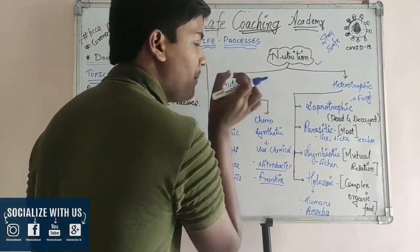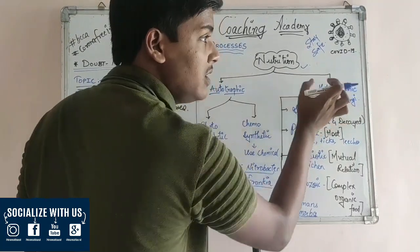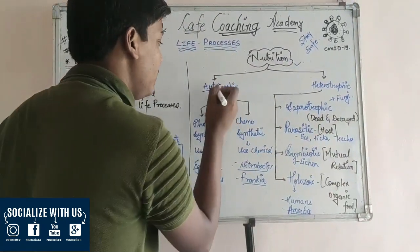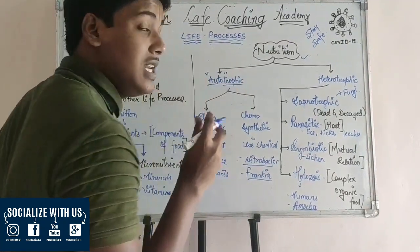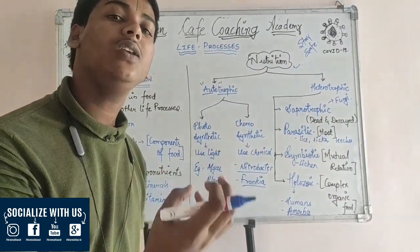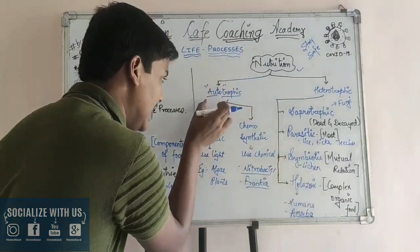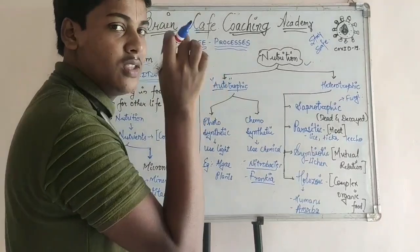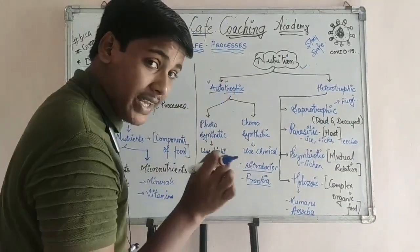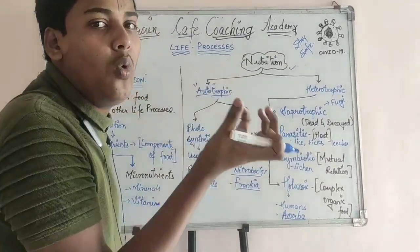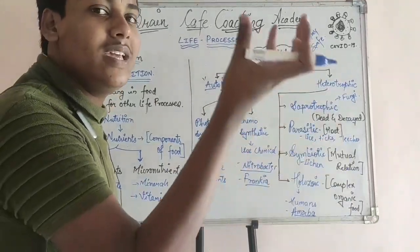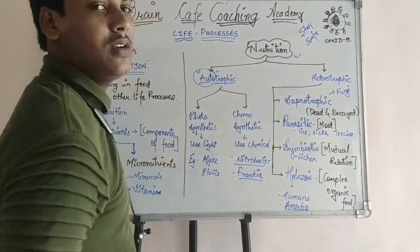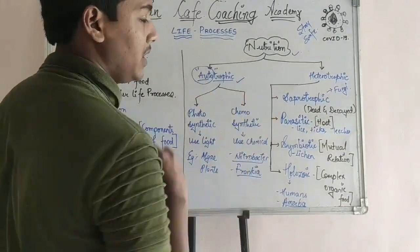In heterotrophic nutrition, organisms are dependent on other organic matter for their food. Autotrophs utilize inorganic substances and prepare their own food. Organisms which utilize inorganic substances and prepare their own food follow autotrophic nutrition.